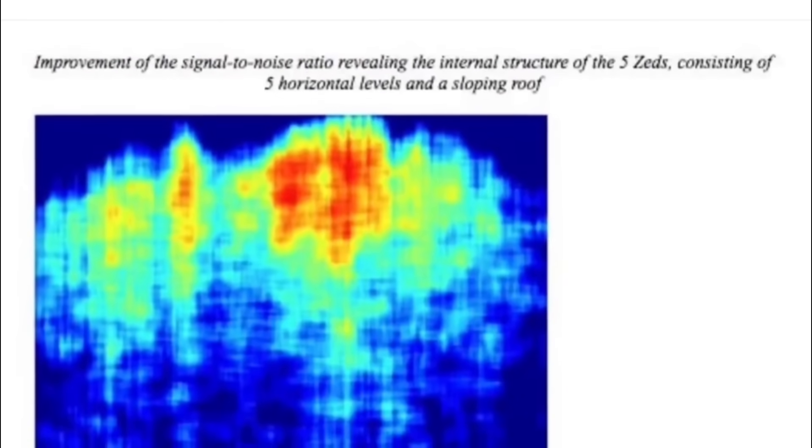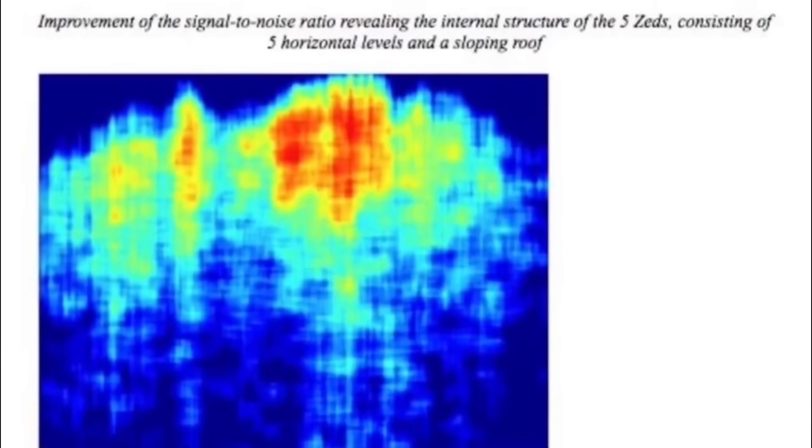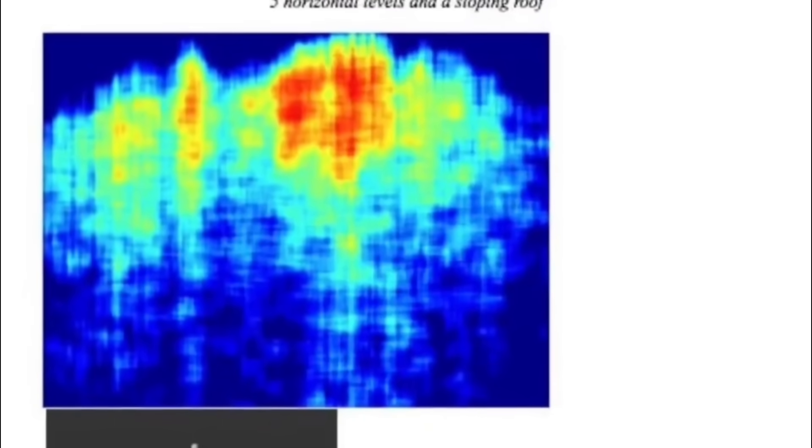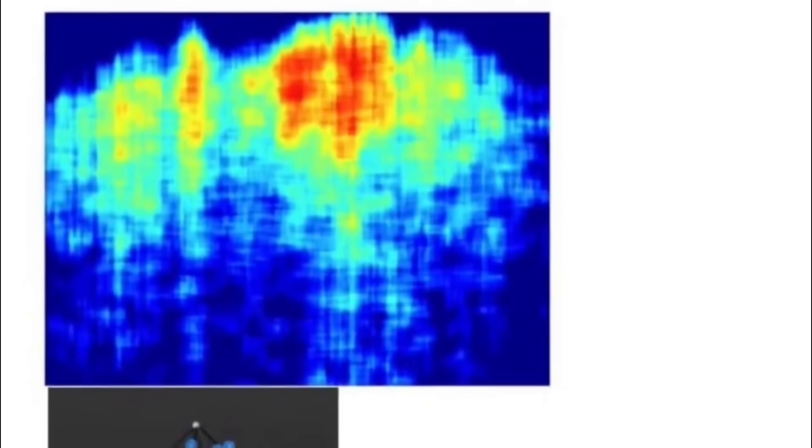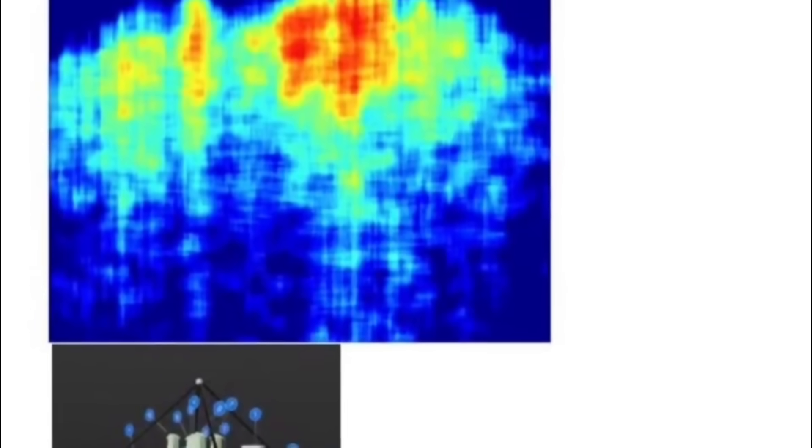On the next page, it says that improvements of the signal-to-noise ratio revealing the internal structure of the five Z's consisting of five horizontal levels and a sloping roof. So this is the raw pictures of the data that they used to create their model. And this is the model.